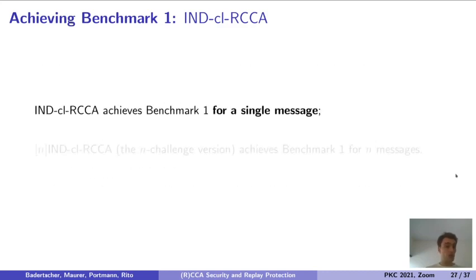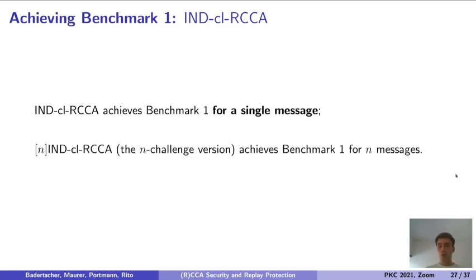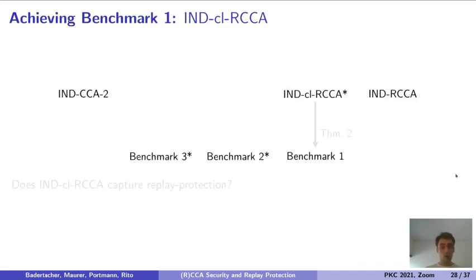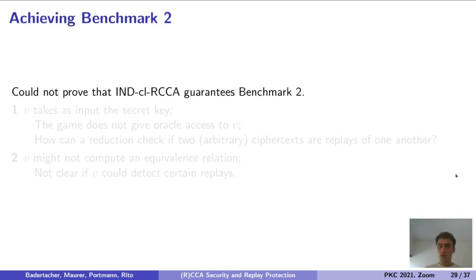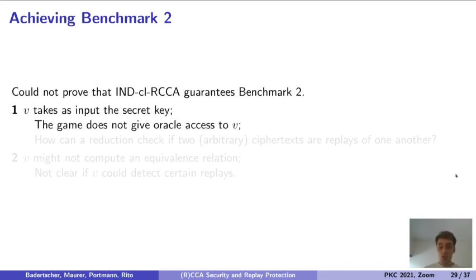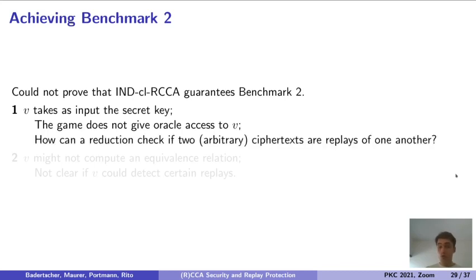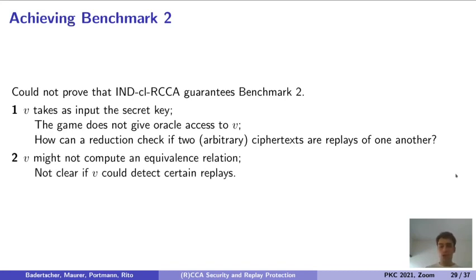We show that INT-CL-RCCA achieves benchmark 1 for a single message, and we also show that the n-challenge version of INT-CL-RCCA achieves benchmark 1 for n messages. One could ask: is INT-CL-RCCA also sufficient to achieve benchmark 2? In other words, does INT-CL-RCCA capture replay protection? Well, we could not prove this, and that is for two main reasons. First, recall that V takes as input the secret key — since the game does not give oracle access to V, it is unclear how a reduction could check if two arbitrary ciphertexts are replays of one another. The second reason is that V might not even compute an equivalence relation, so it is not clear whether V could detect certain replays.